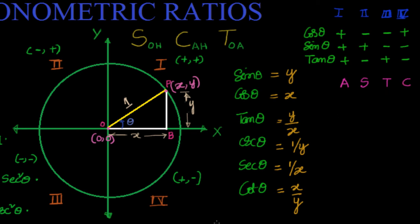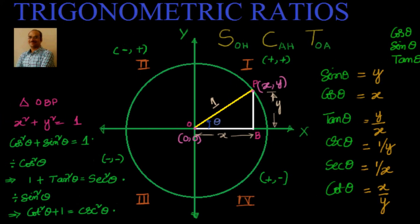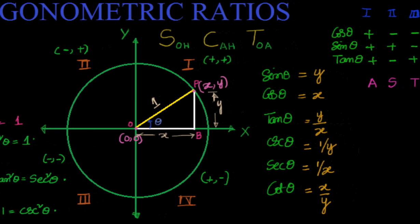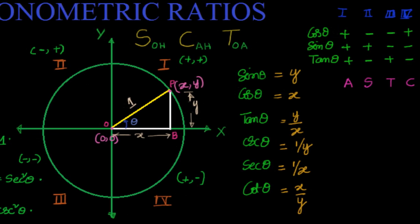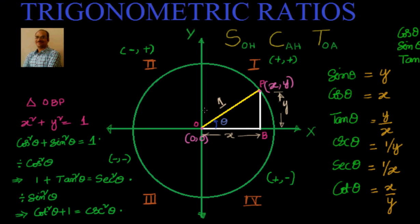In the next video, since we have gone through how we obtained the identities and how trigonometric ratios differ in different quadrants, we will see why cos of minus theta equals cos theta whereas sin of minus theta equals minus sin theta, and we will also go through the next topic. Thanks for visiting. Bye for now.